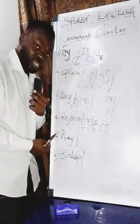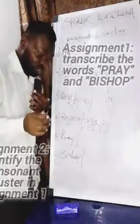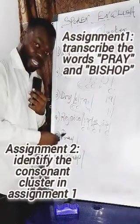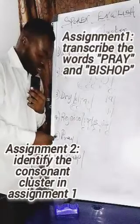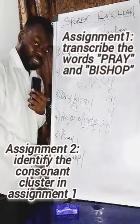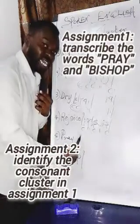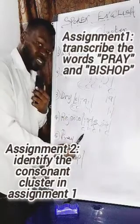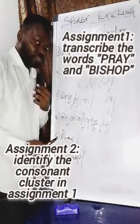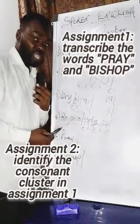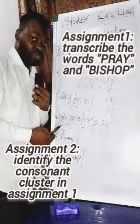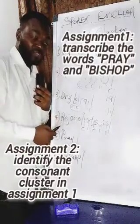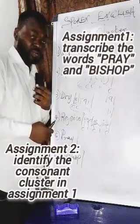I'm going to leave you to answer number five and number six as your assignment. Number five is pronounced as 'pray' and number six is pronounced as 'bishop.' Transcribe both words, state the phonetic symbols, identify the consonant and vowel phonetic symbols, and then identify the consonant cluster. Thank you very much for paying attention to this class. Please subscribe, follow my page, and share so that other students can benefit.